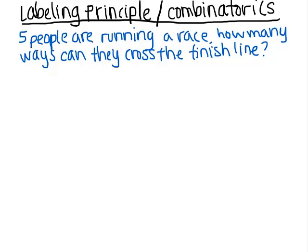Let's start with this first example. Five people are running a race, and you want to know how many ways can they cross the finish line. In this situation, I have five people: one, two, three, four, five.